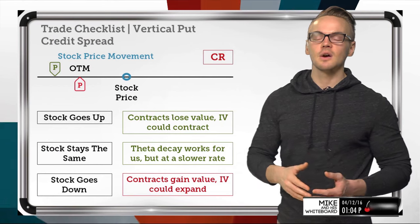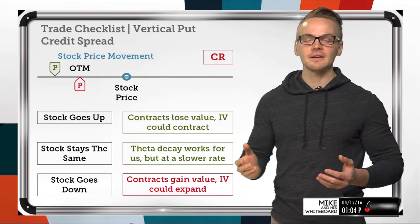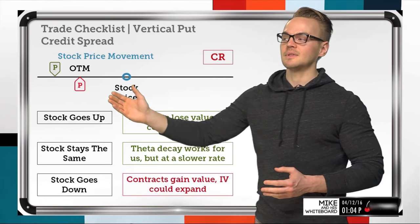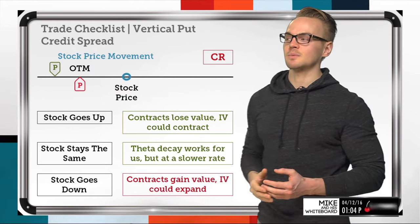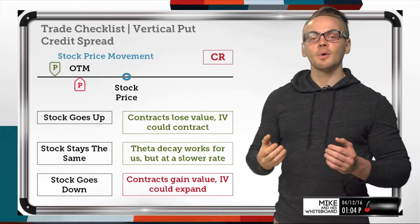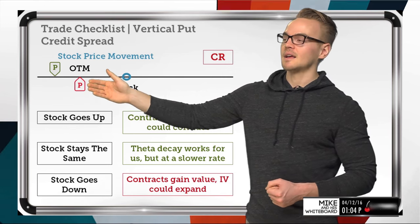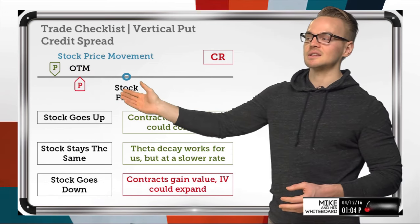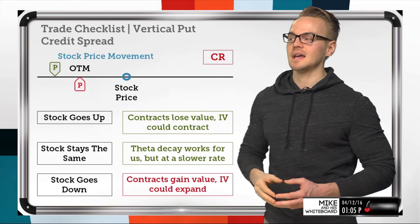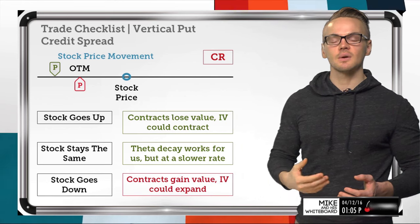If the stock goes up — just like the short naked put — the contracts lose value and implied volatility could contract. We're selling the spread for a net credit, so the short option has more value than the one we're buying. Both put contracts lose value as the stock moves higher and further out of the money. The short option gains in P&L, the long option shows a P&L loss, but since I sold the more valuable one, the net effect is positive.